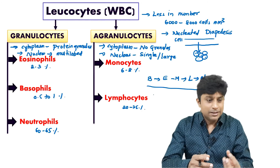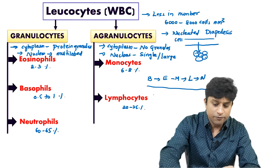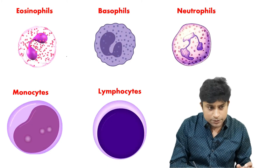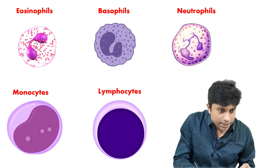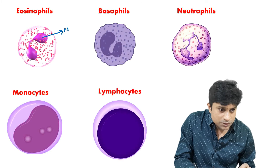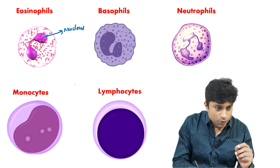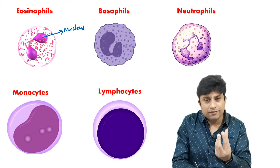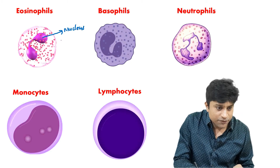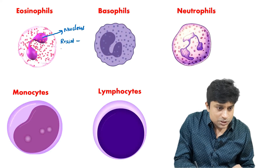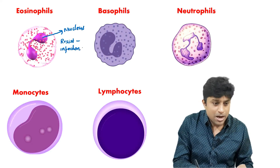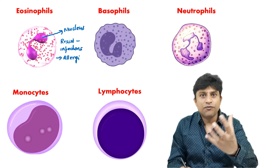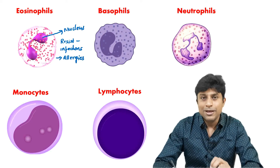Now let's look in detail at the cells and their functions. Eosinophils are just 2 to 3 percent. You can observe their bilobed nucleus. Eosinophils are responsible for resisting infections and are principally associated with allergic reactions — during allergies, their number increases, a condition called eosinophilia.